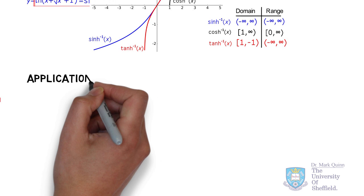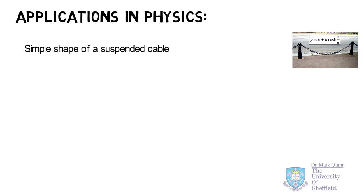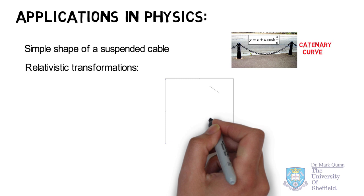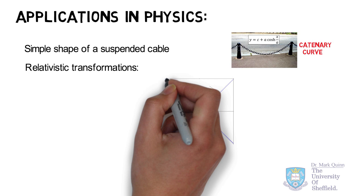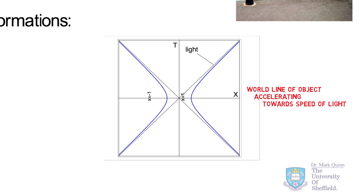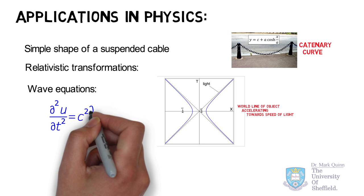There are many applications of hyperbolic functions, particularly in physics. The simplest is the shape of a suspended cable or string, referred to as a catenary, defined by y equals c plus a·cosh(x/a). Hyperbolic functions also appear in the theory of relativity, particularly in relativistic transformations. A world-line diagram showing an object accelerating towards the speed of light forms a hyperbolic curve, never quite reaching the speed of light, indicated by 45-degree asymptotes. Hyperbolic functions also appear in wave equations, particularly solutions to second-order partial derivatives.